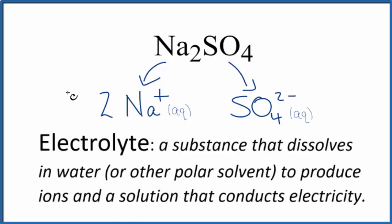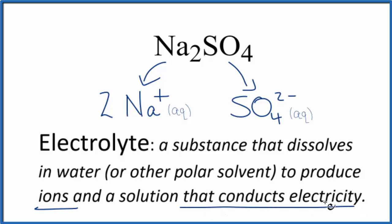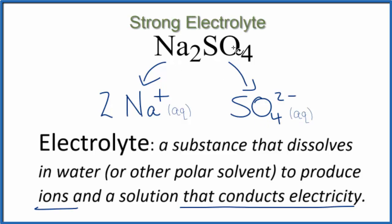Based on our definition for electrolytes — a substance that dissolves in water and produces ions — this dissolves in water, producing our sodium and sulfate ions, so the solution will conduct electricity. Since this is soluble, all of it is going to dissolve. That makes Na2SO4 a strong electrolyte.